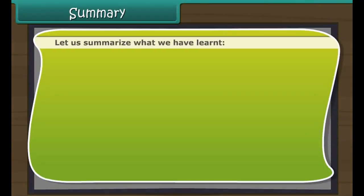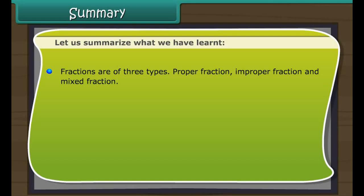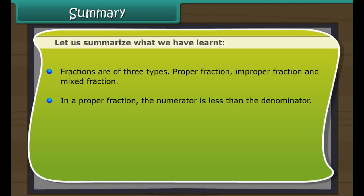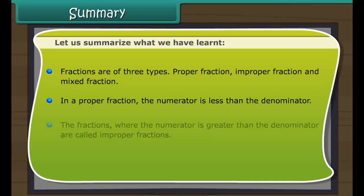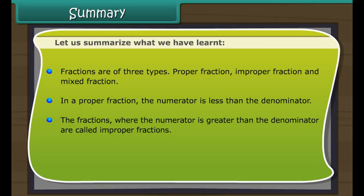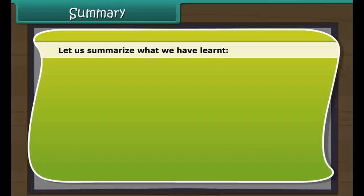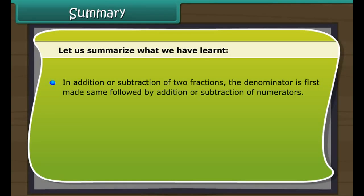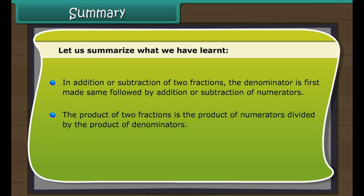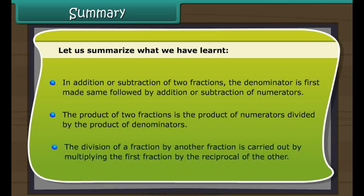Summary: Fractions are of three types — proper, improper, and mixed. In a proper fraction, the numerator is less than the denominator; in an improper fraction, the numerator is greater. An improper fraction can be written as a combination of a whole number and a proper fraction, called a mixed fraction. For addition or subtraction, denominators are first made the same, then numerators are added or subtracted. The product of two fractions is the product of numerators divided by the product of denominators. Division of a fraction by another is done by multiplying the first fraction by the reciprocal of the other.